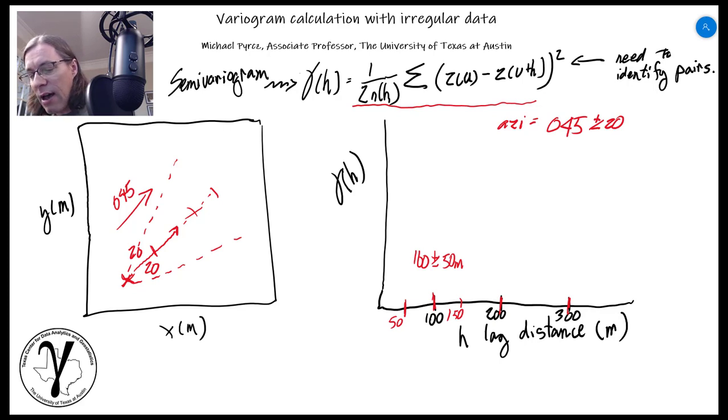So now if I try to draw it, I can draw exactly what I have for a search template. Here is my 50 meter distance, there's my 150 meter distance. I drew an arc - I hope I got a pretty good arc. This is the angle tolerance. I'm willing to take anything within that shape as being a pair. So now I have a template for that first lag in the 45 degree direction at the 100 meter offset. I can take that search template and anchor it on any data and identify all pairs that fall within that template.